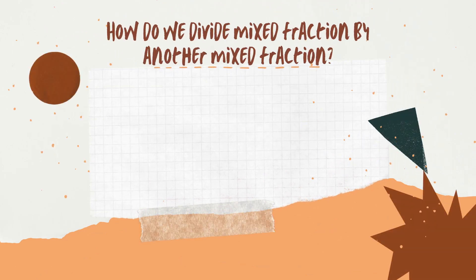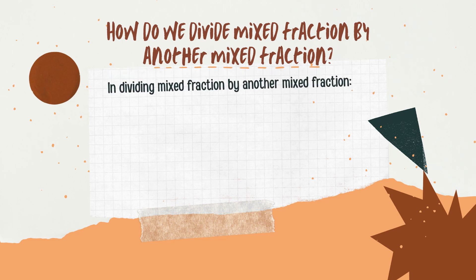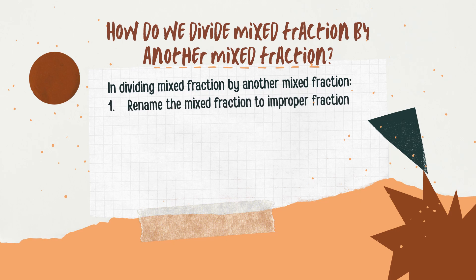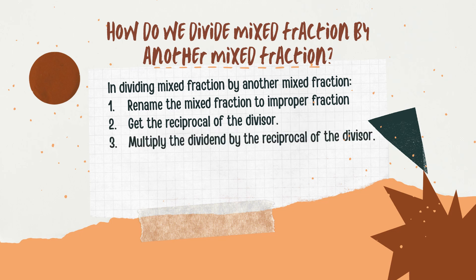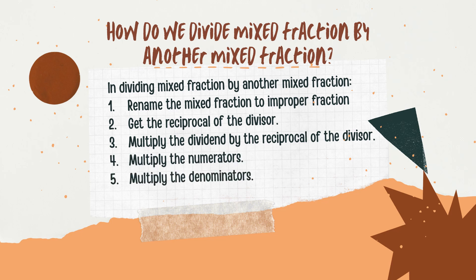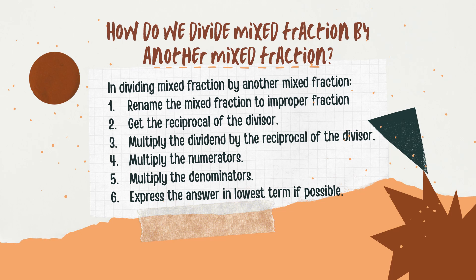So, how do we divide a mixed fraction by another mixed fraction? Rename the mixed fraction to an improper fraction. Get the reciprocal of the divisor. Multiply the dividend by the reciprocal of the divisor. Multiply the numerators and multiply the denominators. Express the answer in lowest terms if possible.